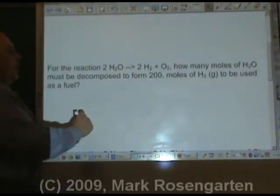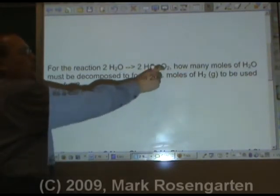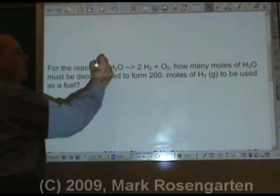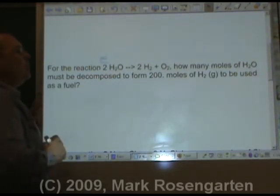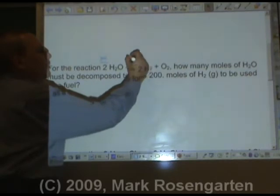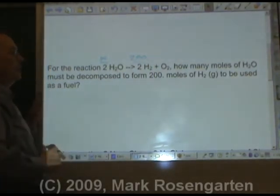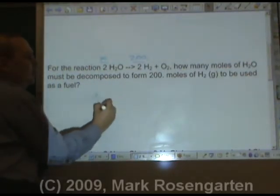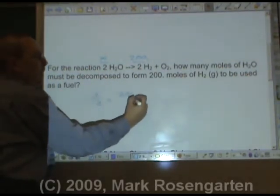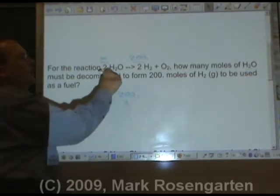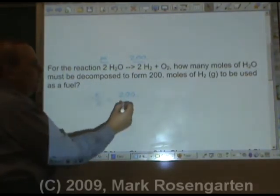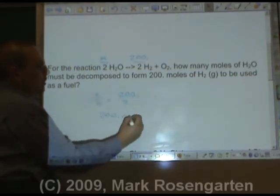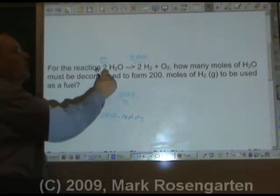For the reaction 2H₂O forms 2H₂ plus O₂, how many moles of H₂O must be decomposed to form 200 moles of H₂ to be used as a fuel? X is to two as 200 is to two. Well, two to two is a one to one ratio, so that's simple. The two and the two cancel out and that gives you X equals 200. 200 moles. Because if it's a one to one ratio, it's a 200 to 200 ratio.